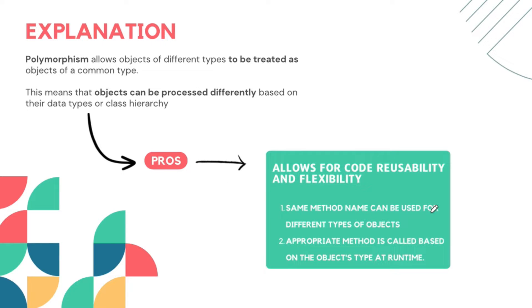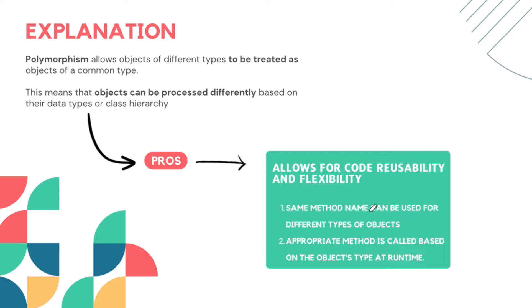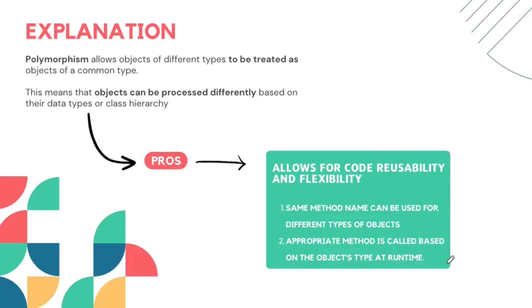There are a few pros to polymorphism. It allows for code reusability and flexibility. As programmers, we are lazy — we need to think of ways to reuse our code, and that's where OOP comes in. The same method name can be used for different types of objects. I can have a function called 'apple' in three different classes — that doesn't matter. The appropriate method is called based on the object's type at the time we create an instance.